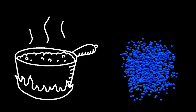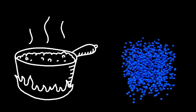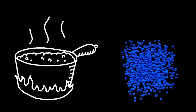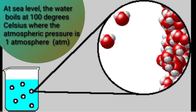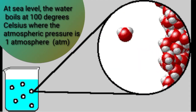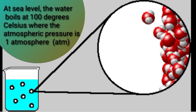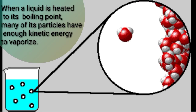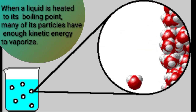The boiling point of a liquid may vary with atmospheric pressure, which changes with altitude. At sea level, water boils at 100 degrees Celsius, where the atmospheric pressure is 1 atmosphere. When a liquid is heated to its boiling point, many of its particles have enough kinetic energy to vaporize.